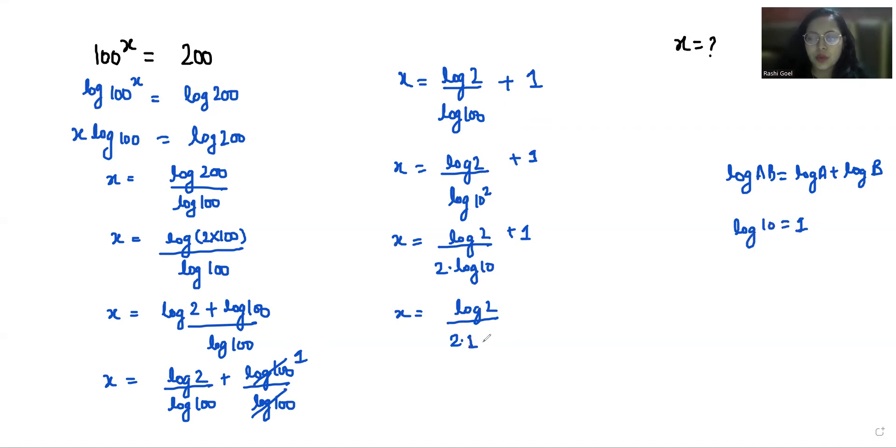So 2 times 1 plus 1. The value of log 2 is 0.301, so 0.301 by 2 plus 1. When we divide it by 2 we get 0.1505 plus 1.